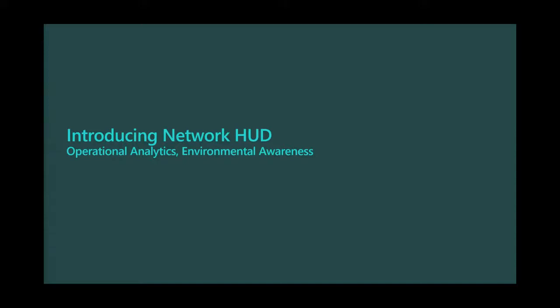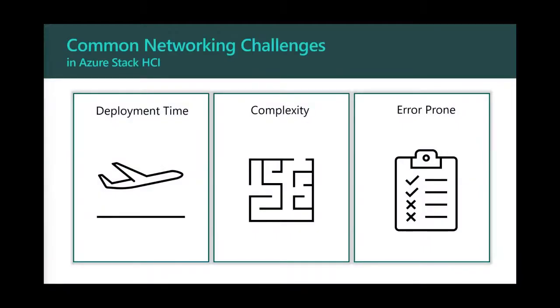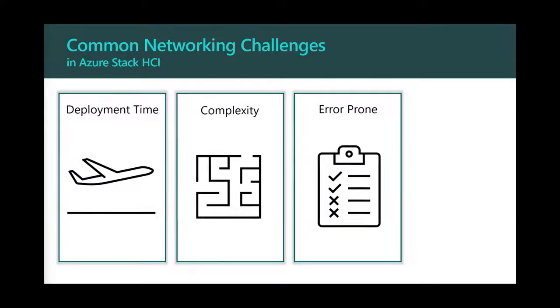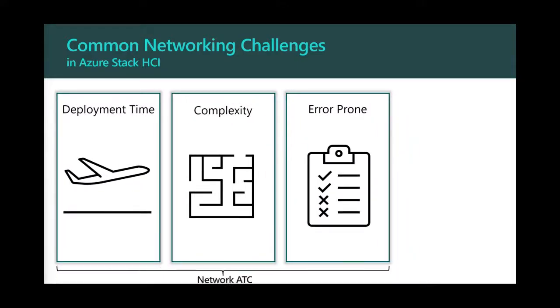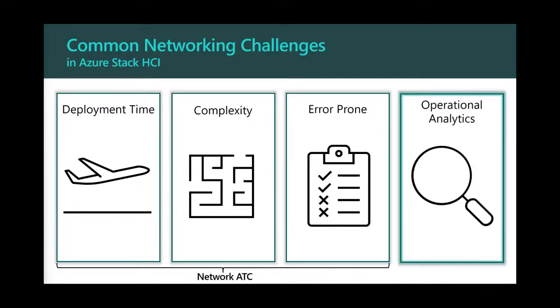With that, we're going to talk about one more great new feature I'm really excited about — it's called Network HUD. This is really about finding or identifying operational problems in your environment. After Network ATC has deployed your environment, how do you know it's actually working? Network ATC configures the host, but you might have a physical network sitting in between actually stopping your connectivity between nodes — and how do you know that? It becomes very challenging to tell, and it's all specific to your environment.